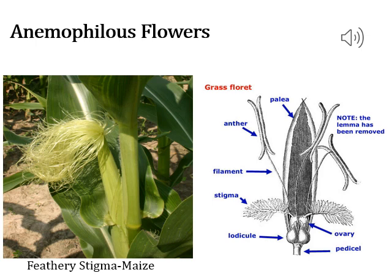The best example for anemophily is maize, which is also the best example of spikelet inflorescence. In this picture you can see the feathery anthers — the tassel in maize. This structure consists of a spikelet with non-sticky, feathery anthers that are transferred through wind and help in pollination.